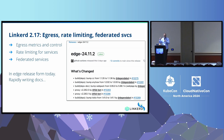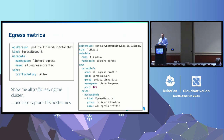With 2.17 we get to flex our feature muscles a bit. The features are: egress metrics, egress controls — that's traffic leaving your cluster — rate limiting, and federated services, which is probably my favorite feature.